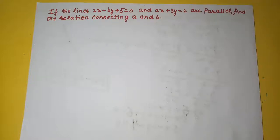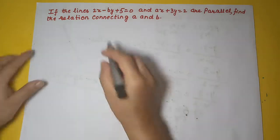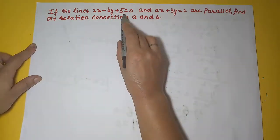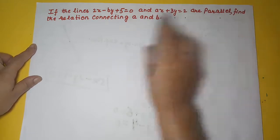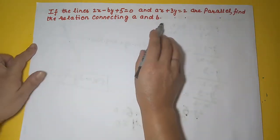We are continuing with the equations of the straight line. Here the question is, if the lines 2x minus by plus 5 equal to 0 and ax plus 3y equal to 2 are parallel, find the relation connecting a and b.